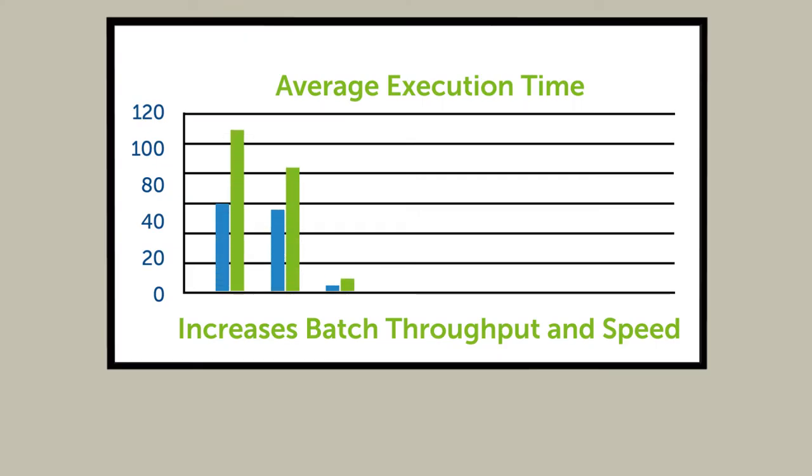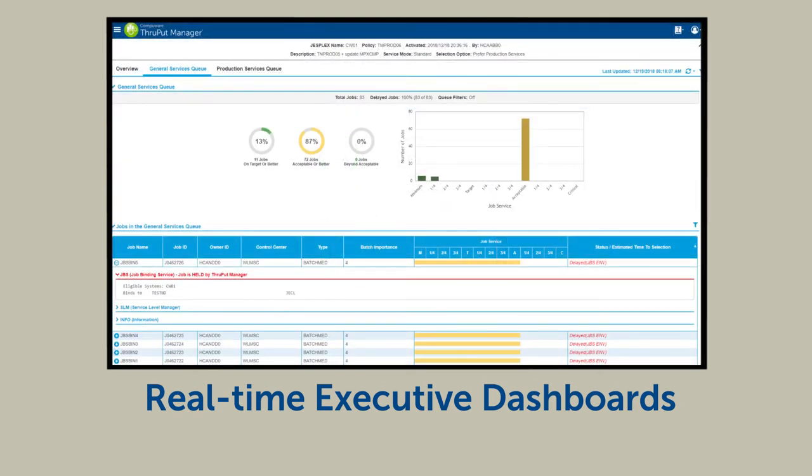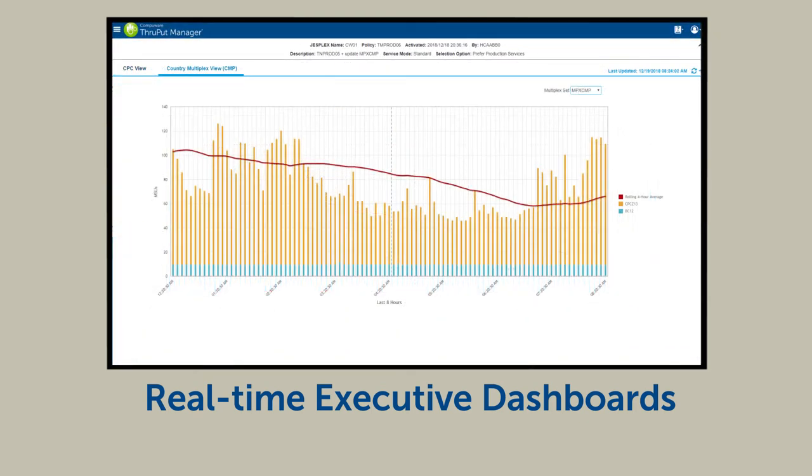Plus, executing the optimal number of concurrent batch jobs increases throughput and speed. Finally, Throughput Manager reports results in real-time executive dashboards.